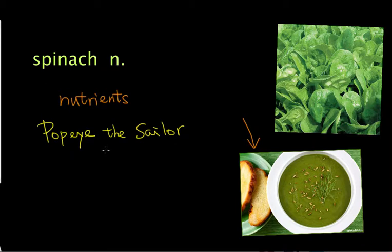So that he can save his girlfriend Olive from that bad guy called Pluto, or Brutal. And for Popeye, it's important that he eats his spinach.